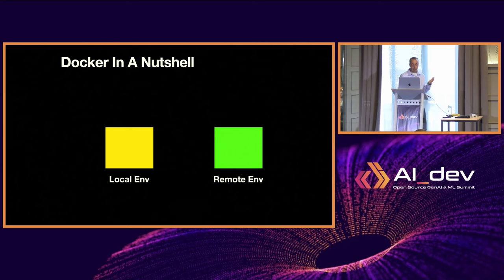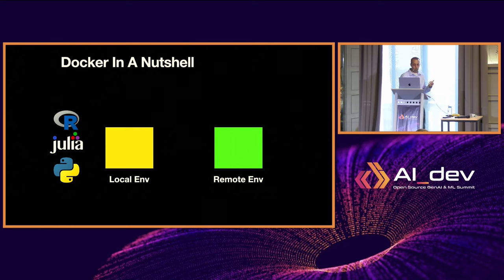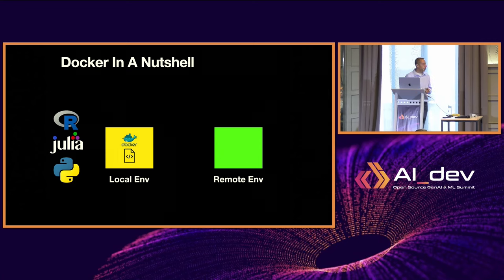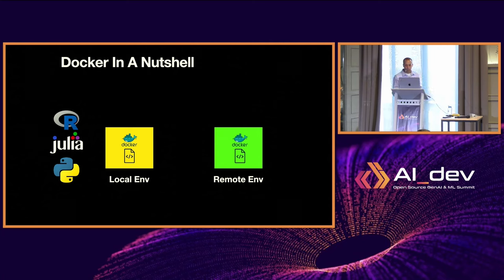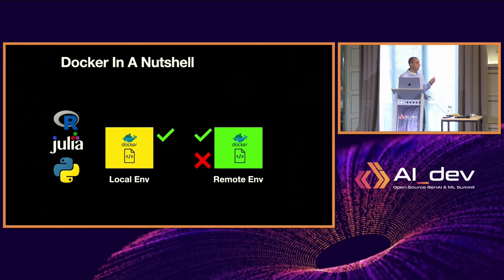In a nutshell, Docker works like this: you develop on your local environment, wrap your environment and code inside a container, and ship it to remote — whether that's AWS, GCP, GitHub Actions, and so on. Whatever you test on your machine should work on the remote, and if something fails on the remote, you can reproduce it locally.